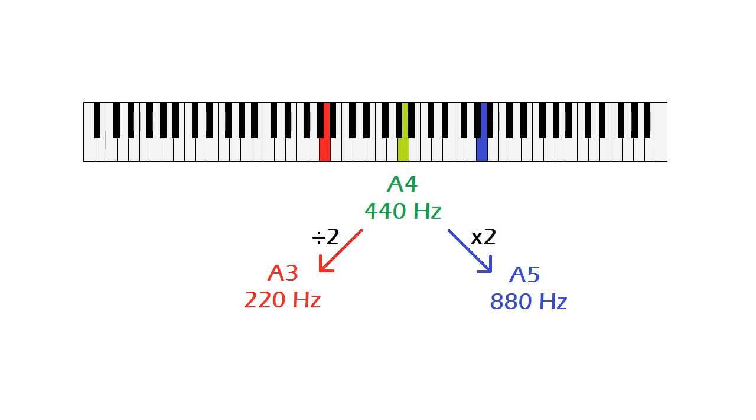An important property is that, for any note, the same note in the next octave will have double the frequency, and the same note in the previous octave will have half the frequency. So, if A4 has a frequency of 440 Hz, then A5 has a frequency of 880 Hz, and A3 has a frequency of 220 Hz. That is why when you play the same note in two different octaves, we get the maximum possible harmony between two notes, because a higher frequency is an exact multiple of the lower one.